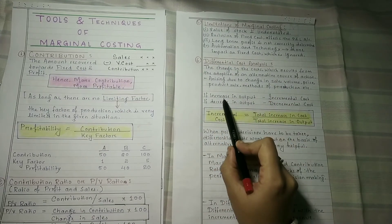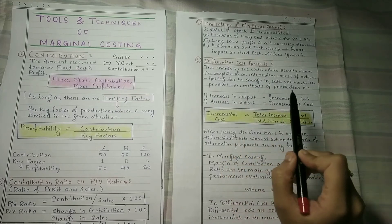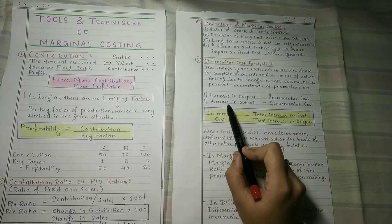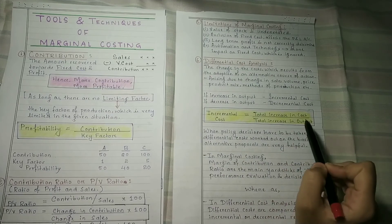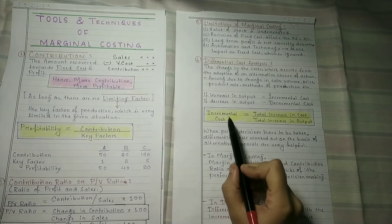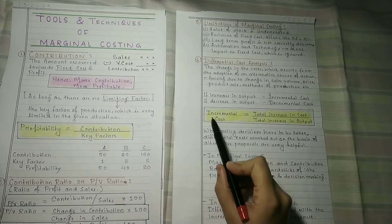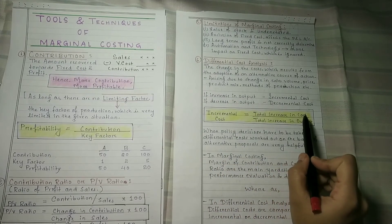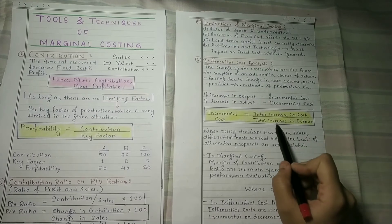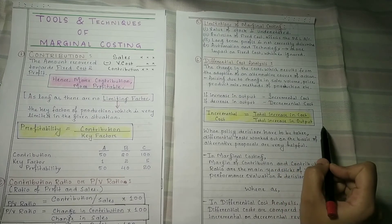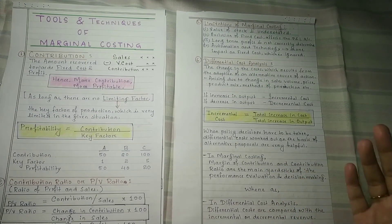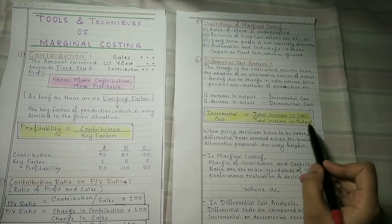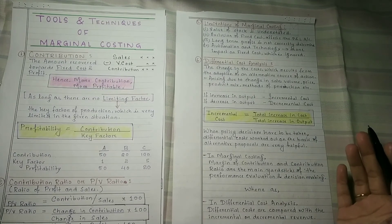If our output increases, we call it incremental cost; if our output decreases, we call it decremental cost. The formula: incremental cost equals total increase in cost divided by total increase in output. Decremental cost equals total decrease in cost divided by total decrease in output.